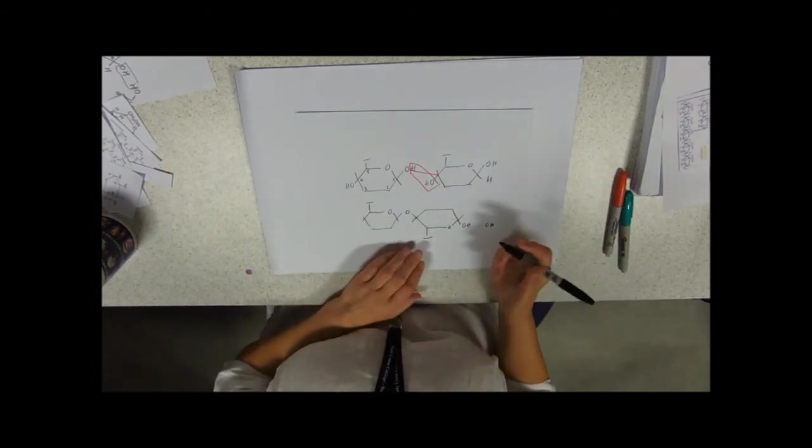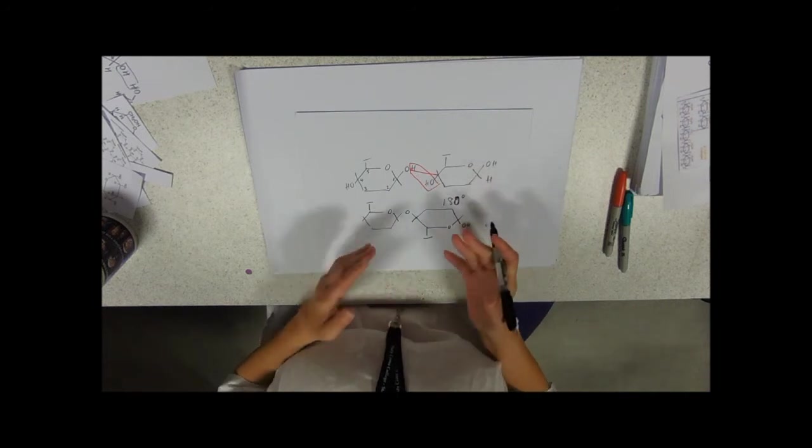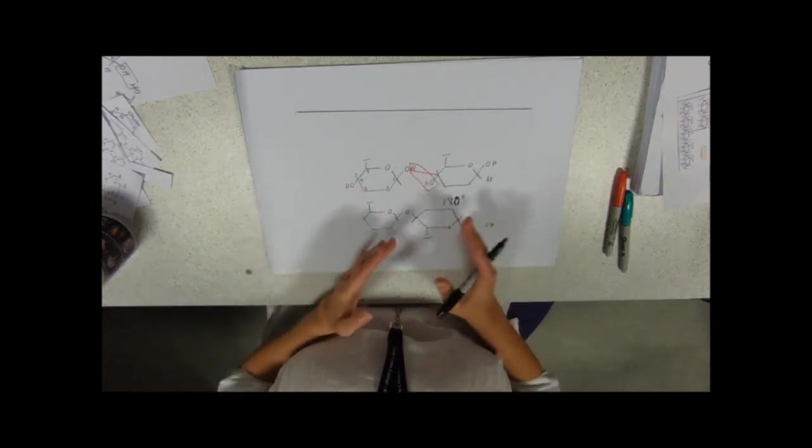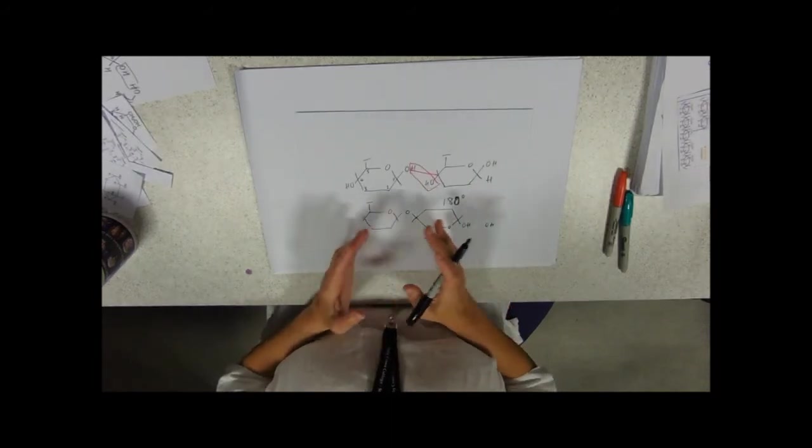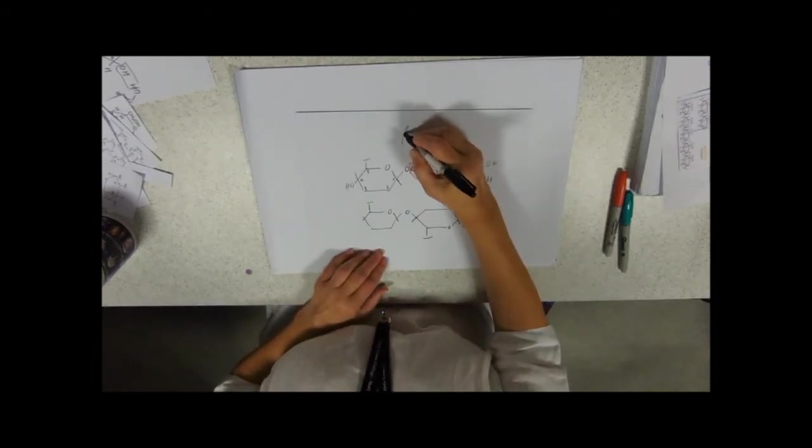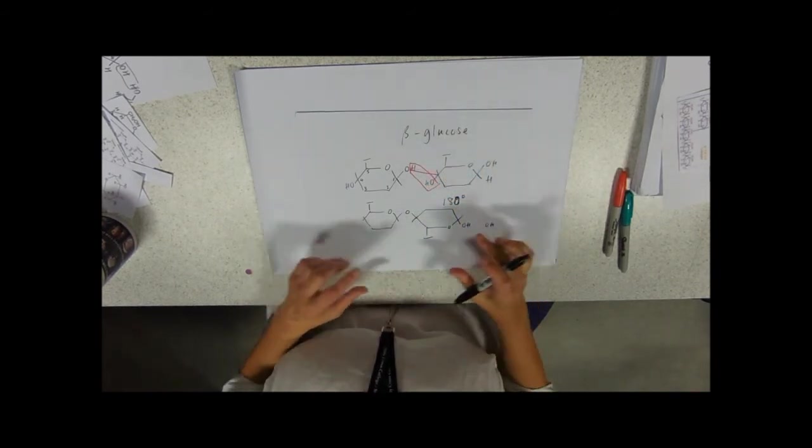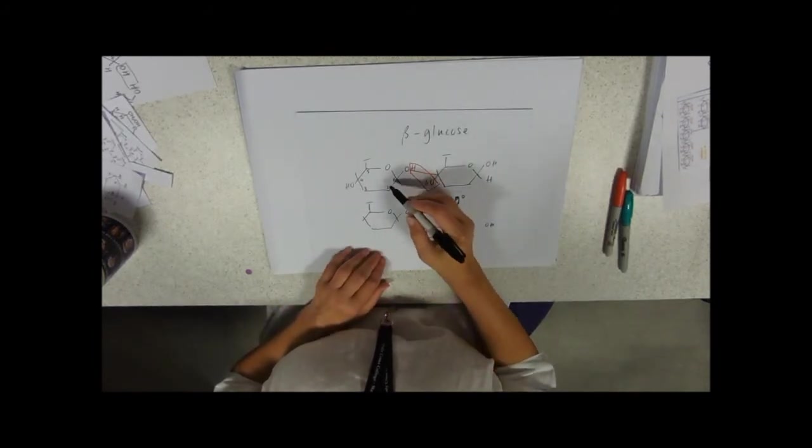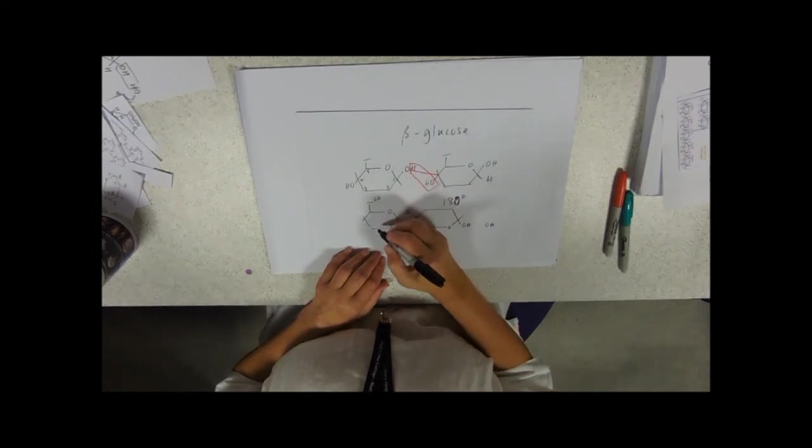So they're flipped, not through 90 degrees, but through 180 degrees. So we've turned it completely upside down. That's really important because that means that these polymers of beta-glucose don't make curves. They make straight chains. And on either side, we've got these OH groups sticking out. So we've got one there, and these will be probably involved in bonding.